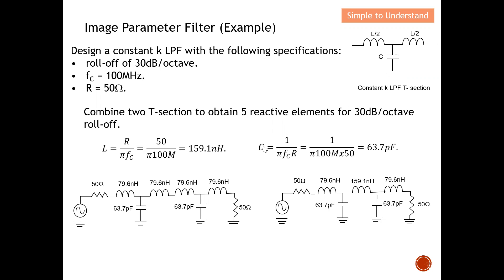Using the formulas from the previous slide: with R = 50 Ω and fc = 100 MHz, L = 50 / (π × 100 MHz) = 159.1 nH. For the capacitor, C = 1 / (π × fc × R) = 1 / (π × 100 MHz × 50) = 63.7 pF.